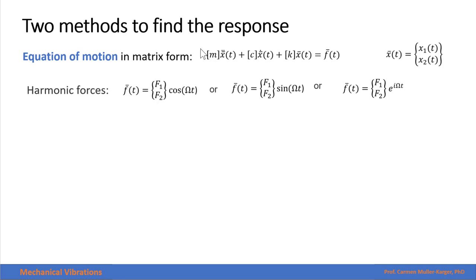We have our equation of motion in matrix form with mass, damping, and stiffness matrices. We have our vector of generalized coordinates, and then we have harmonic forces. They can be expressed in terms of a cosine or sine function, or as exponential forces e to the i omega t.